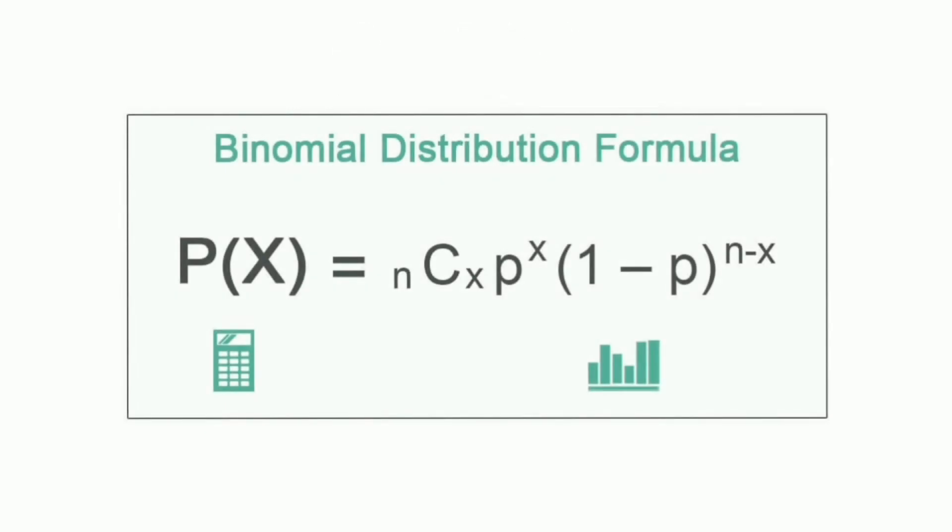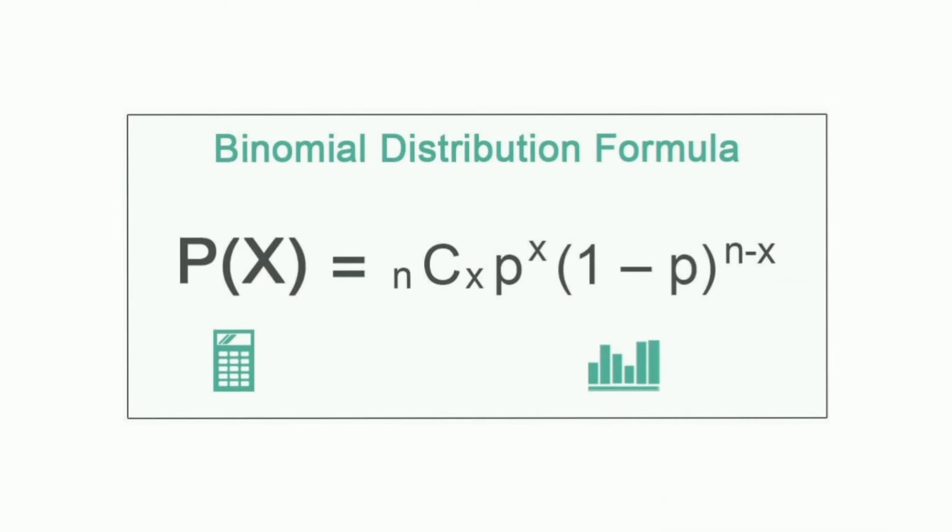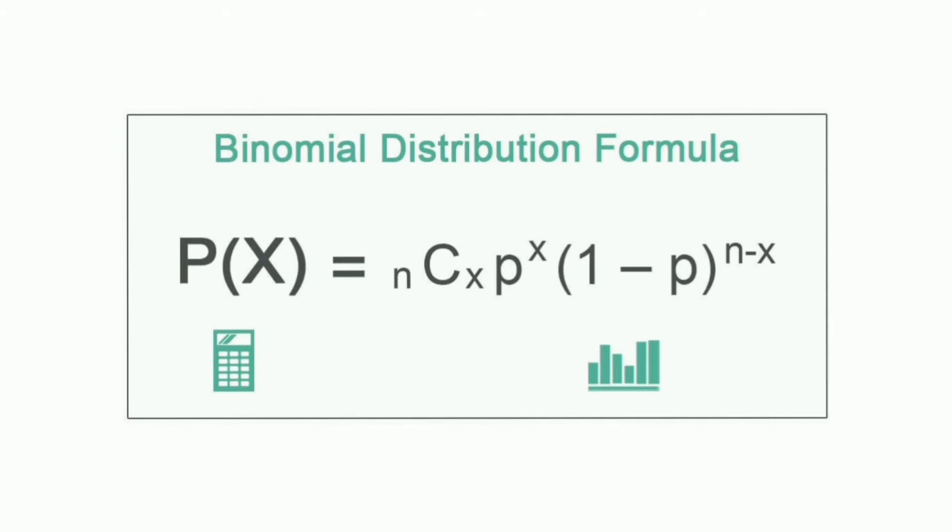This form of binomial distribution has P(X) equals n times C times x times p to the power of x, and in brackets it's 1 subtracted by p to the power of n subtracted by x. It's a mouthful to say and a headache to take in. So let me explain. In this form, the nCx is actually just the combination formula. The real formula we use to calculate the binomial distribution is actually in its second form.